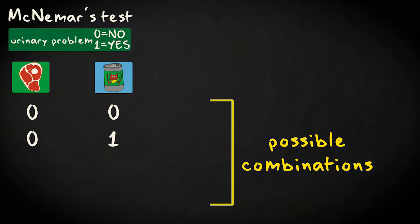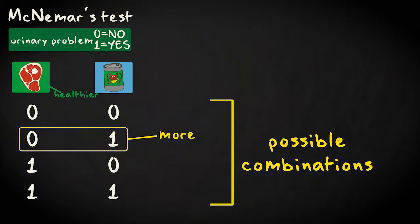Only the cat with a canned diet has problems. Only the cat with a raw diet has problems. Or both have problems. If a raw diet is healthier, we expect more instances of the second combination, with cats on raw food being healthy and their counterpart on canned food having problems.